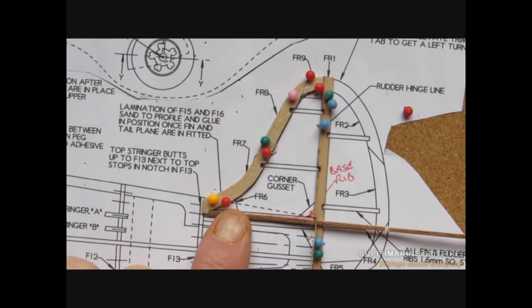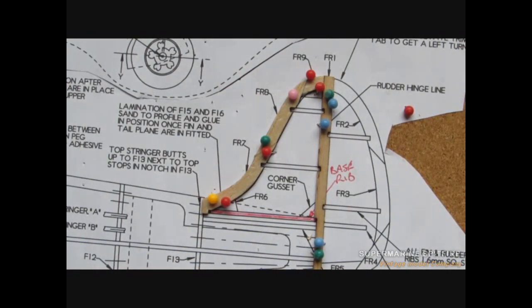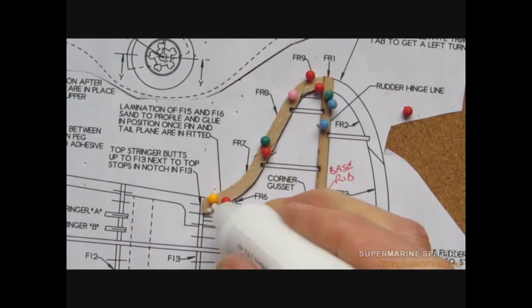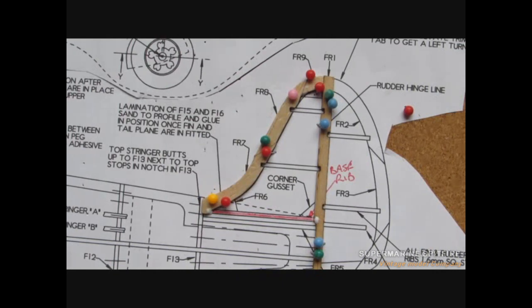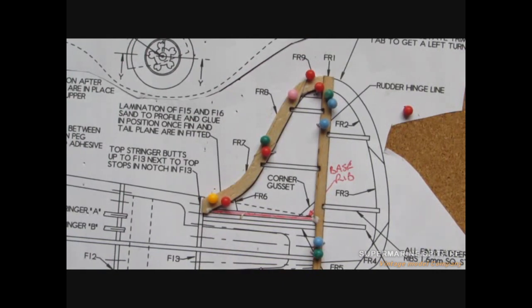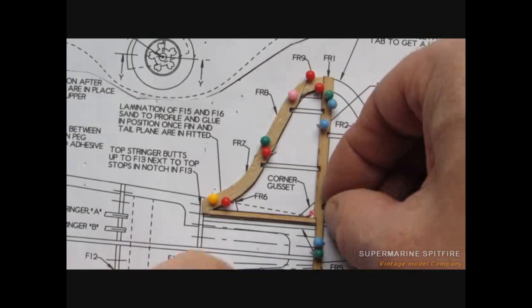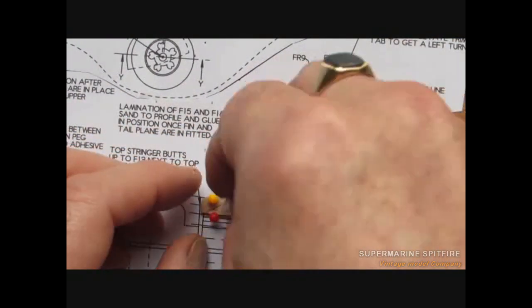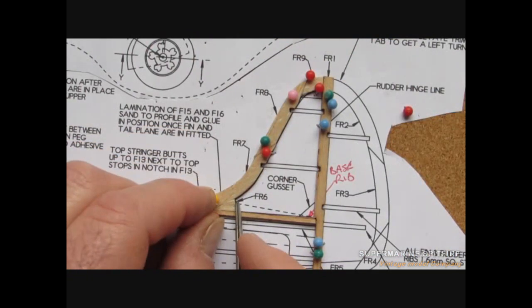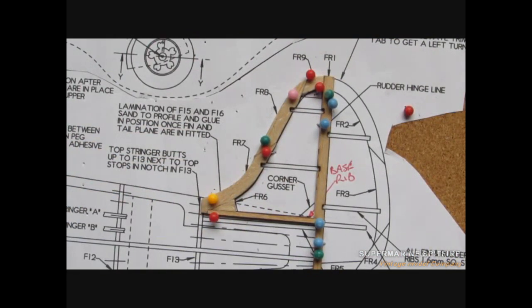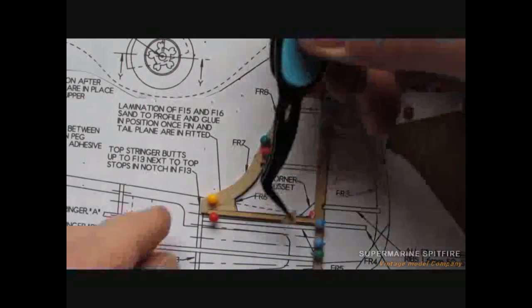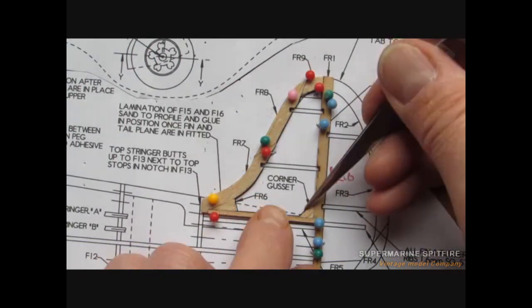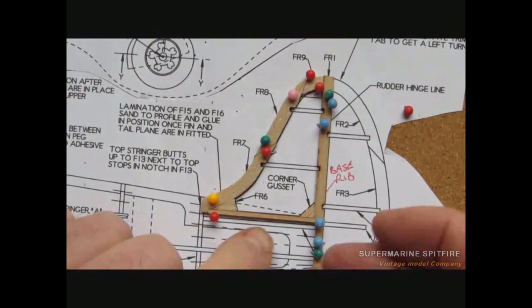The next thing to do is to measure out and cut the base rib, which is cut again from the hard sheet. So cut that, get that ready, pop that into place, glue it up, and then add your corner gusset and your opposing gusset, the FR6, which is just slightly longer than the standard corner gussets. Glue them into position, make sure they are nice and tucked in.